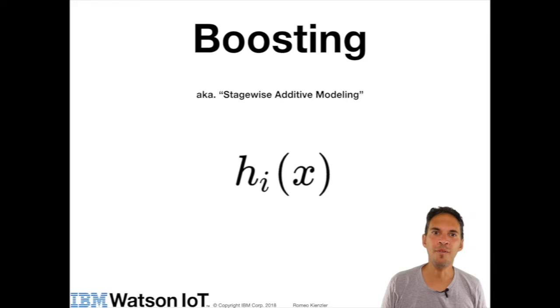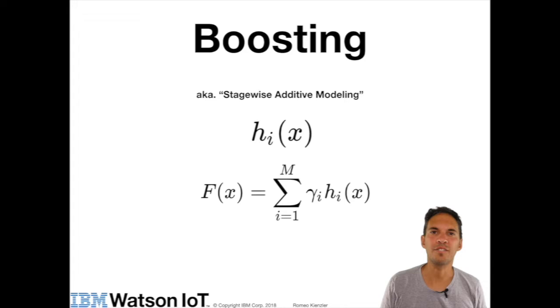So let's consider h_i of x to be a weak model. So i is an index of the model. So then, we can define the strong learner capital F of x as the sum of all the weak models weighted by gamma i.